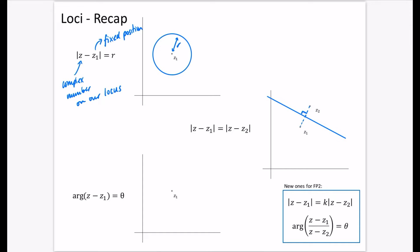The third locus is about the argument of Z. When you subtract Z1 it tells you where the new centre is. We write arg(Z - Z1) = θ. I've drawn it with an empty circle to show that the point itself is not included in the locus, because a single point by itself doesn't have an argument.